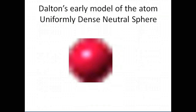This is Dalton's model of the atom, which existed in the early 1800s. At that point in time, Dalton thought that the atom was just a uniformly dense neutral sphere, had no charge. That was pretty simplistic, but that was the model of the atom at that time.